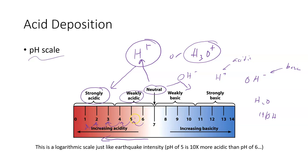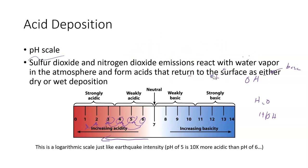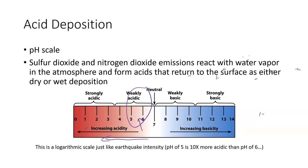A pH of 5 is 10 times more acidic than a 6; a pH of 4 is 100 times more acidic than a 6; a pH of 3 is 1,000 times more acidic than a 6, and so on. We're bringing up pH because of an issue caused by atmospheric pollution called acid rain. Normal rainwater, as it falls through the atmosphere, naturally picks up things like carbon dioxide, which can create carbonic acid. So normal rainwater has a pH kind of between 5 and 6, and even though it is slightly acidic, we don't refer to normal rainwater as acid rain.